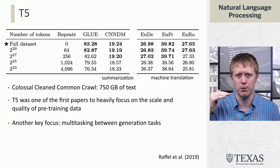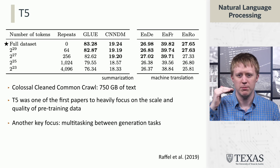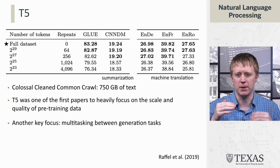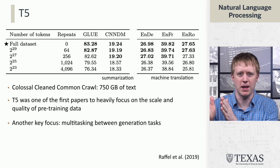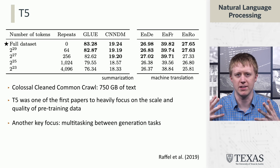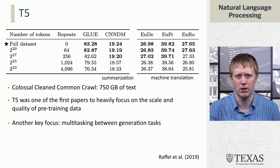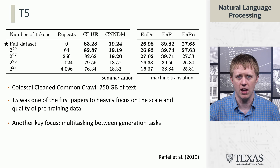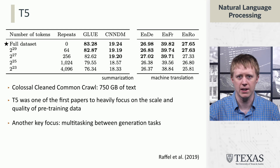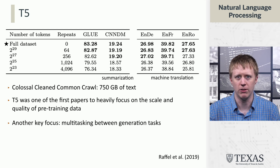Across different rows of the table, they look at taking smaller amounts of data but copying and pasting it, so you end up with the same total dataset size and train for the same amount of time, but it's just repeated more. We see that having more unique data does lead to improvement, and it doesn't seem like we've necessarily hit the limit of that yet — which will come up later when we talk about bigger, more modern pre-trained models.